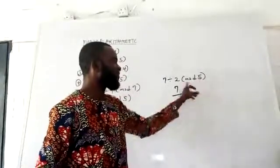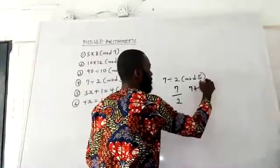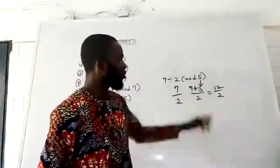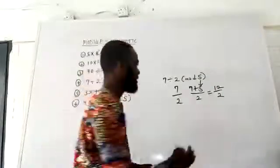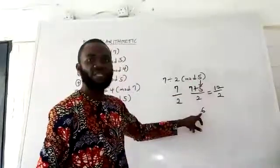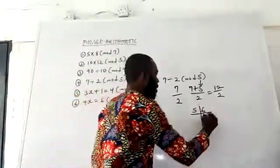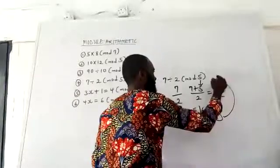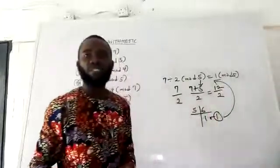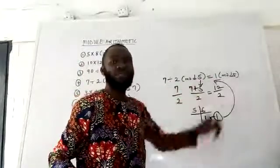So 7 plus my modulus (5) gives 12. So I have (7 + 5) all over 2, which is 12 over 2. 12 divided by 2 gives 6. That means 6 is my result. But in mod 5, we cannot have 6. So 5 into 6 gives 1 remainder 1. My remainder becomes the answer. So I'm going to have 1 in mod 5. That implies 7 divided by 2 in mod 5 gives 1 in mod 5.